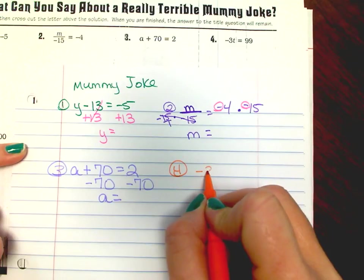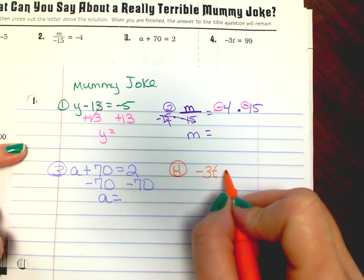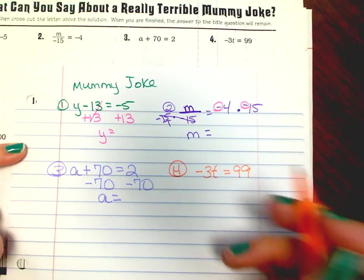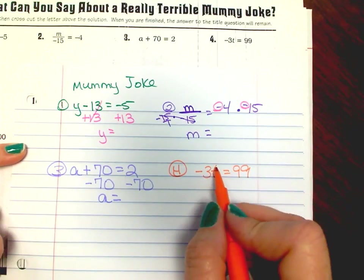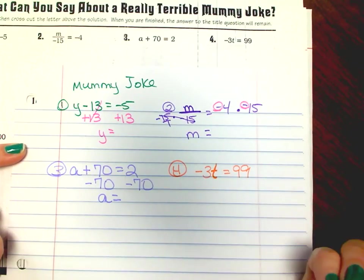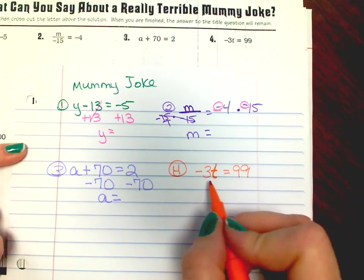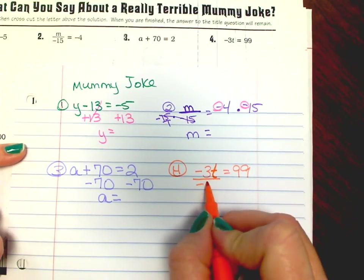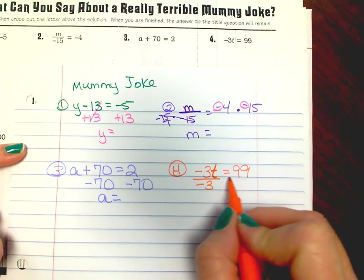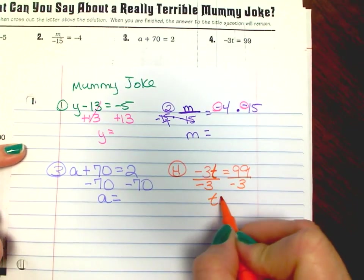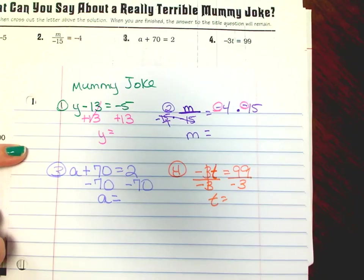Number four. Negative 3t equals 99. So you find your variable and ask what is it doing to the number — it's multiplying. So you want to do the opposite, which is to divide by negative 3. Then you'll solve for t because that cancels out.